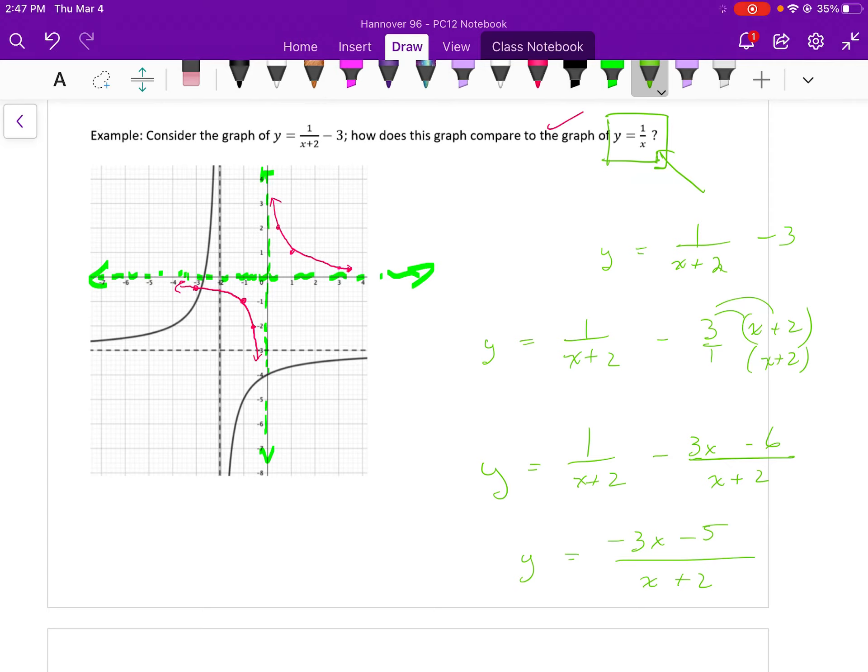So, there you have it. If you wanted to, instead of graphing this using transformations, you could change this into its rational form and then graphing. Looking at it, now you're able to see what your vertical and horizontal asymptotes are.